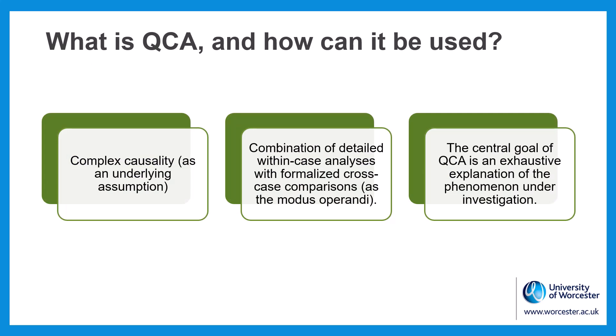In general terms, QCA can be described by its principles: complex causality as an underlying assumption, and the combination of detailed within-case analysis with formalized cross-case comparisons as the modus operandi. Each principle fits into what kind of research profits from using QCA. The central goal of QCA is an exhaustive explanation of the phenomenon under investigation.